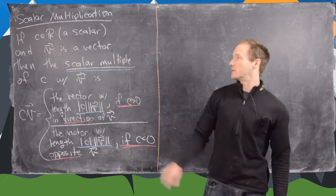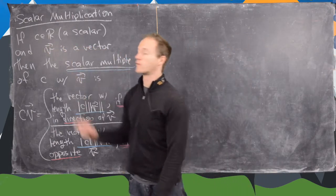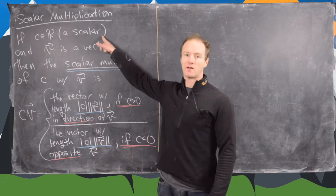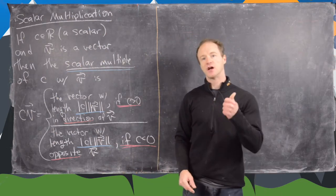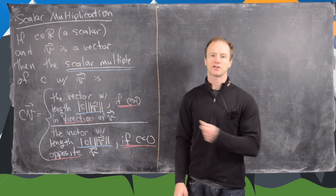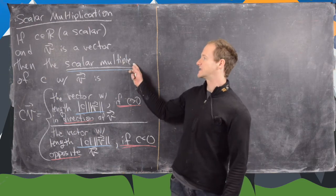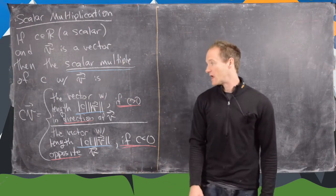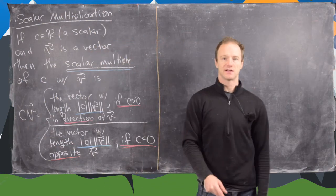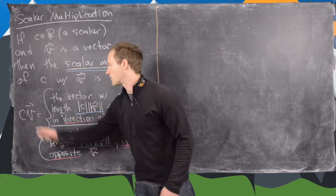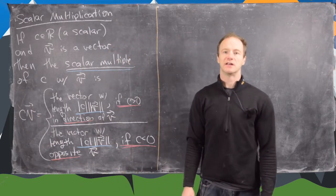So let's look at the definition. If we have c, a real number which we'll call a scalar, and v is a vector (could be any dimensional vector: a two vector, three vector, n vector, whatever), then the scalar multiple of c with v we denote as follows. We just put c next to v like this. Notice we keep the arrow over v, but there's no arrow over c because it's not a vector.